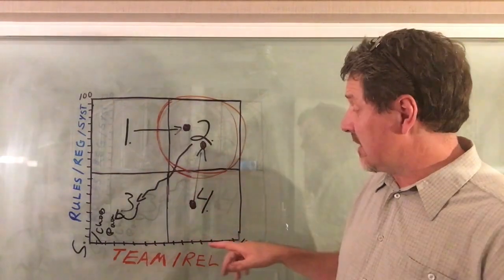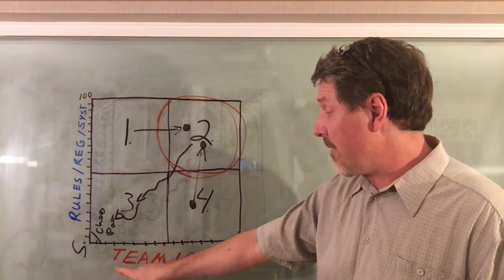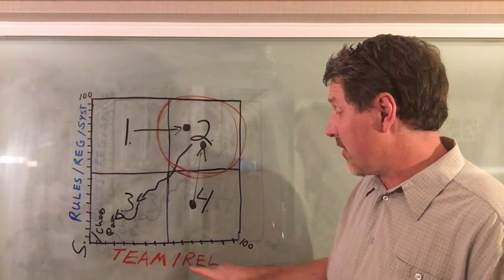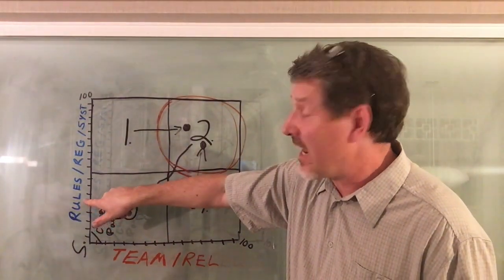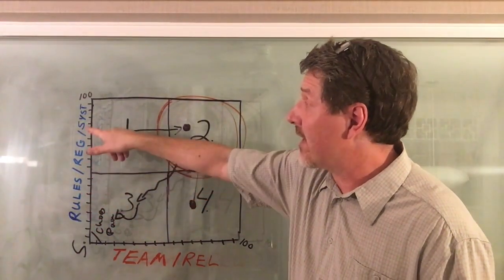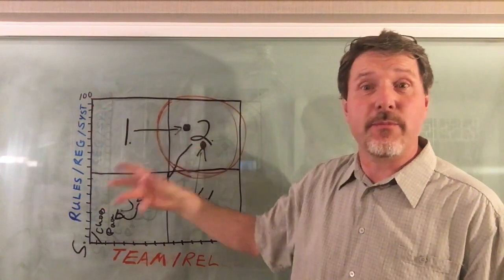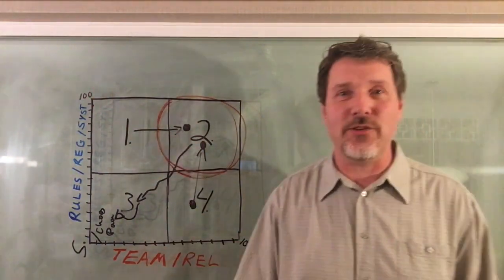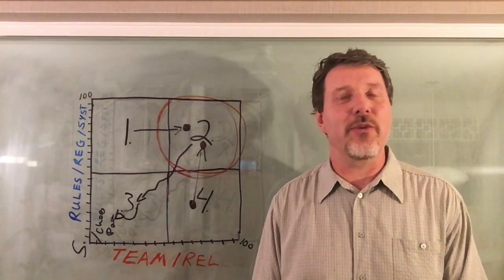The problem with offseason is often people haven't been able to maintain and build their team and their relationships, and they haven't been able to build a sustainable system of rules, regs, and a structure that's going to keep them going in the offseason. The brain is like a muscle: whatever you exercise gets stronger, whatever you don't exercise gets weaker.